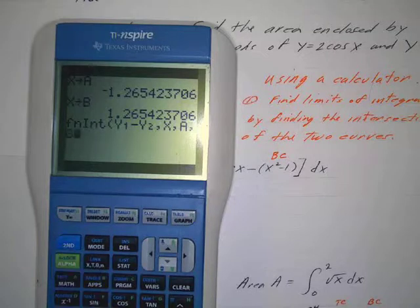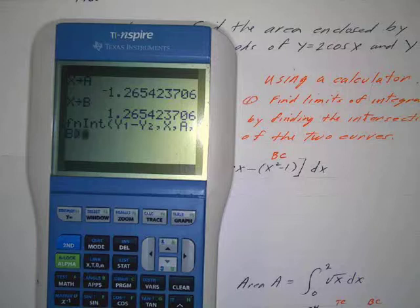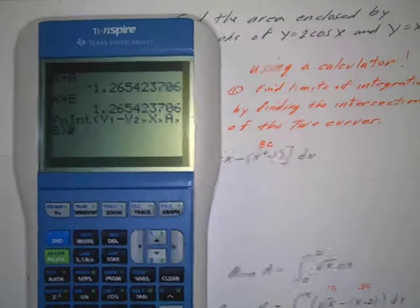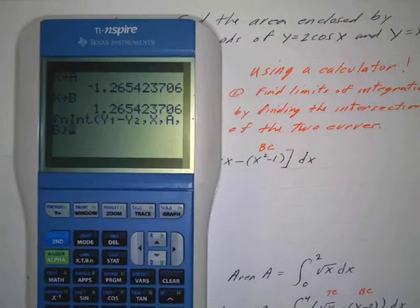Comma x is my variable of integration, and I'm going to go alpha a, comma alpha b, parentheses. So now we got that in there. I hope everybody can see that okay. So that's your top curve minus your bottom curve, integrated from a to b.